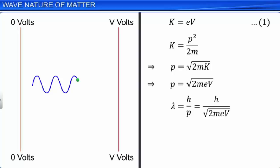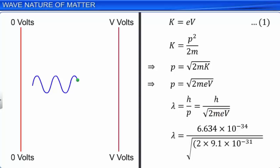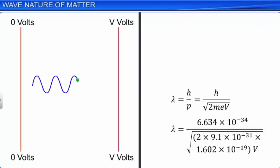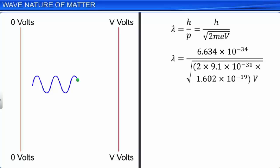Substituting the numerical values of Planck's constant h = 6.634 × 10⁻³⁴ J·s, mass of the electron m = 9.1 × 10⁻³¹ kg, and charge on an electron e = 1.602 × 10⁻¹⁹ C, and simplifying, we arrive at the equation: λ = 1.227/√V nanometers. At a potential difference of 120 volt, λ = 0.112 nanometer.